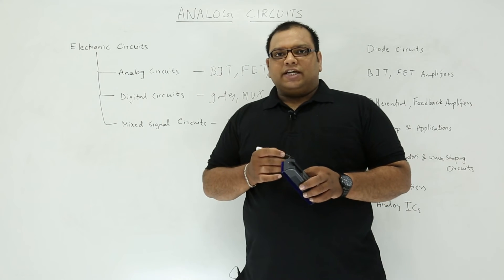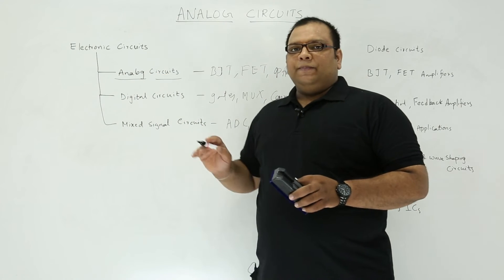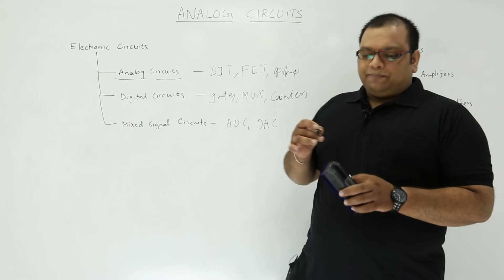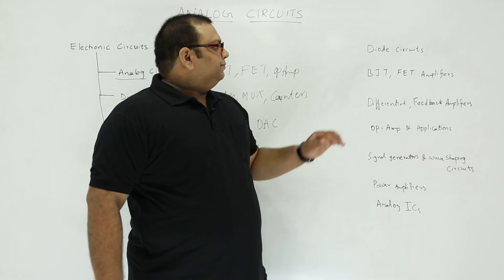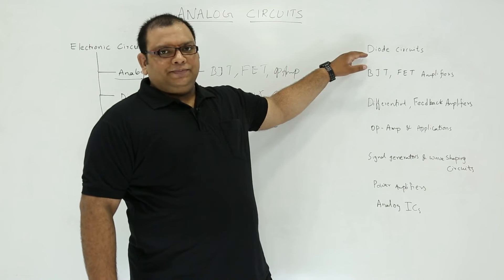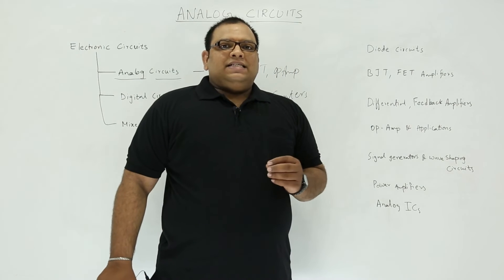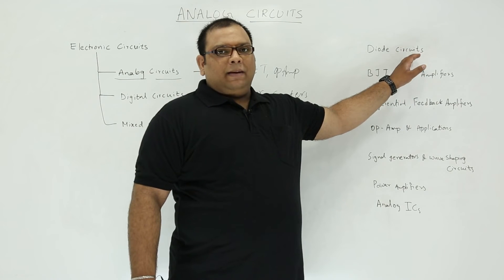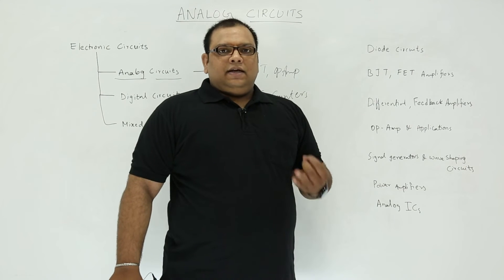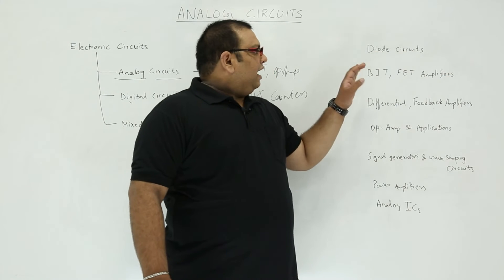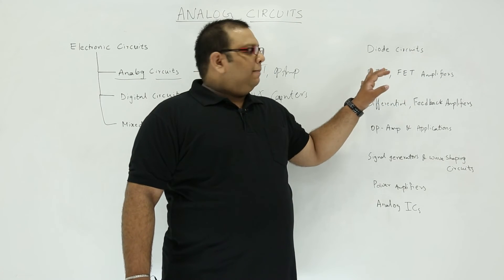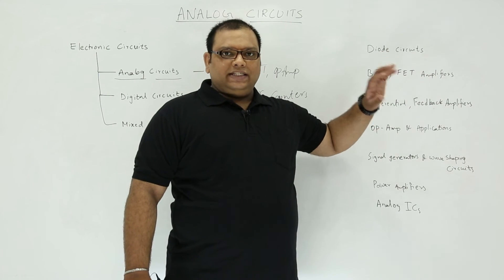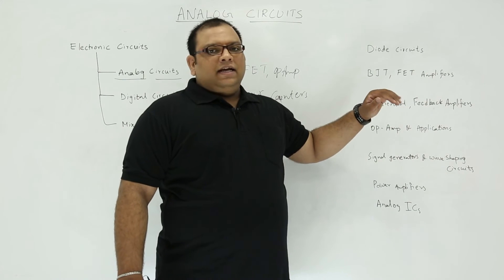This is the major classification of electronic circuits. In this course we are dealing with analog circuits, which majorly covers amplifiers, oscillators, and filters. Looking at the GATE syllabus for analog circuits, we start with diode circuits — small signal equivalent of diodes, applications like rectifiers, clippers, clampers, and voltage regulators. Then we discuss BJT and FET amplifiers, including biasing, small signal equivalents, voltage gain, input and output resistance, and frequency response.